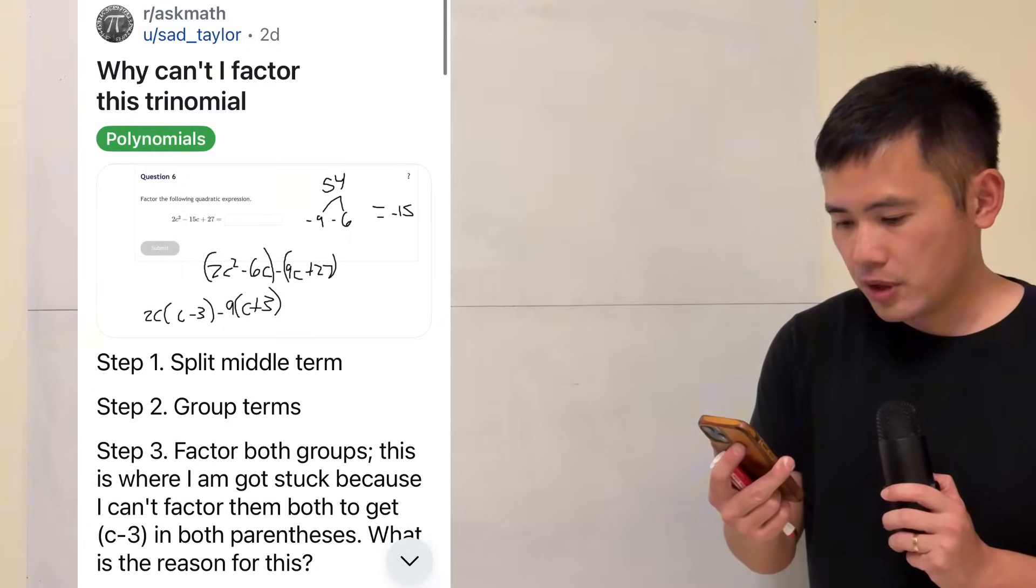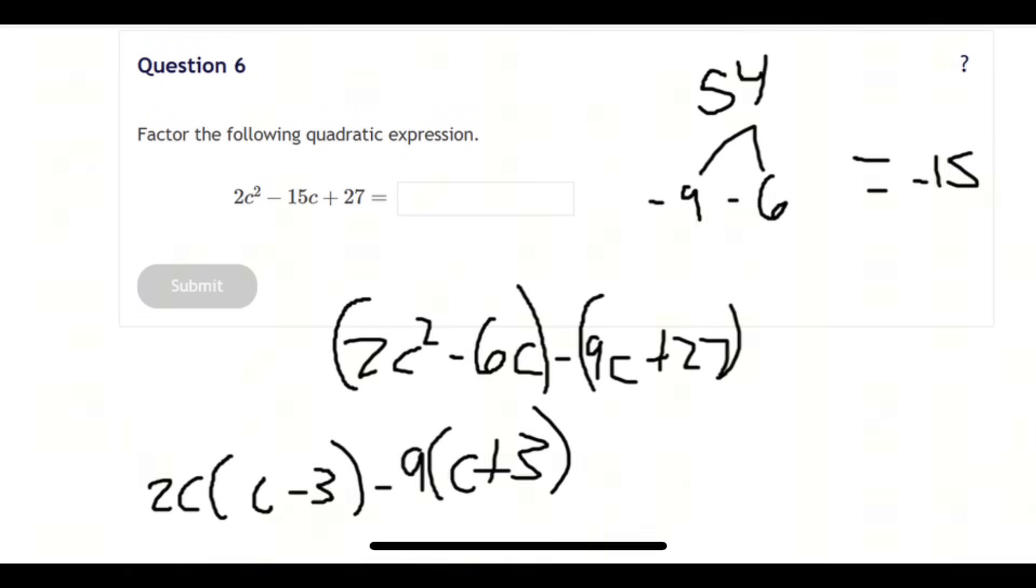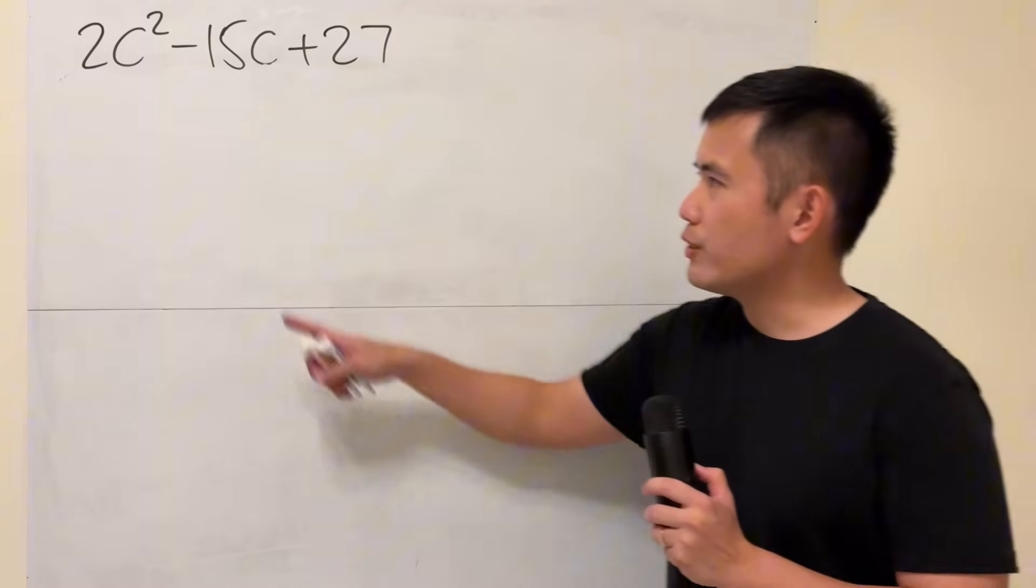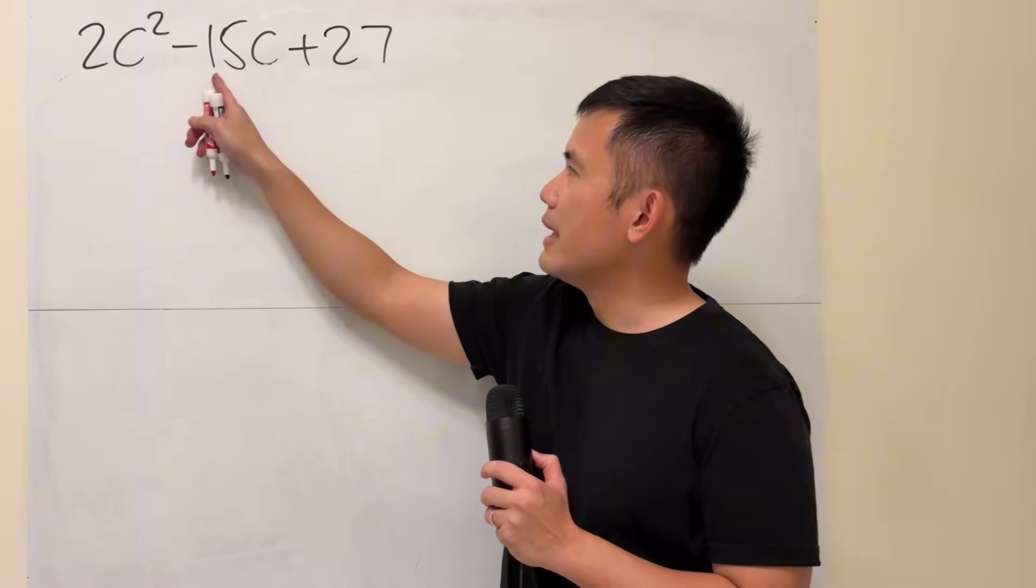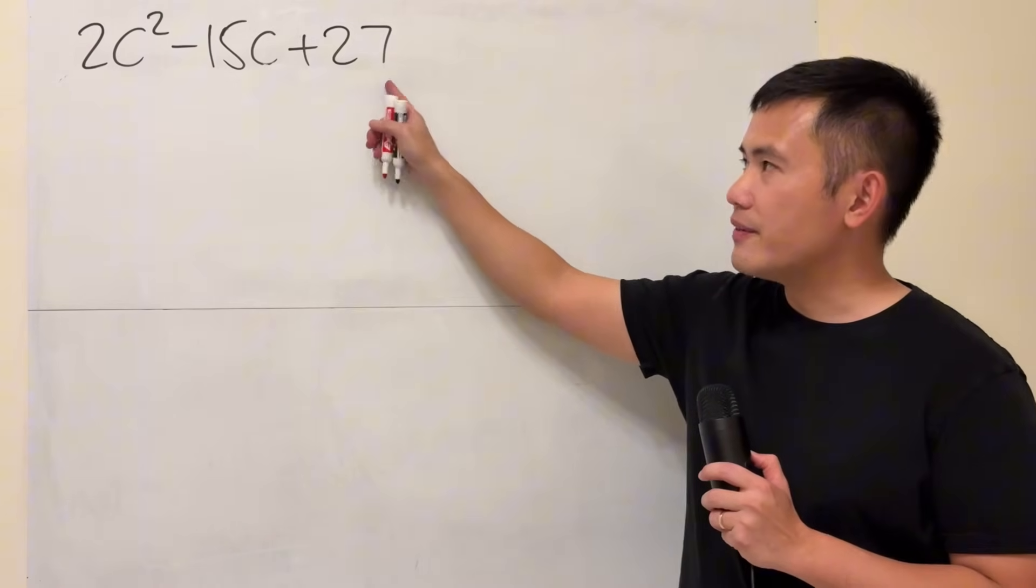Why can't I factor this trinomial? Right here we are trying to factor 2c squared minus 15c plus 27.